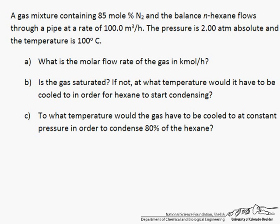We need the molar flow rate of the gas in kilomoles per hour. We need to find out if the gas is saturated, and if it isn't, what temperature would it have to be cooled to. And finally, to what temperature would the gas have to be cooled to at constant pressure in order to condense 80 percent of the hexane.